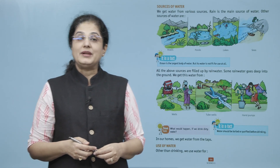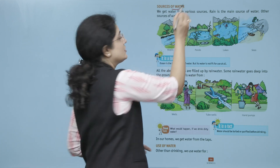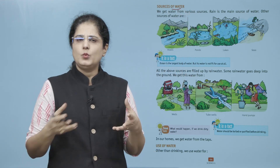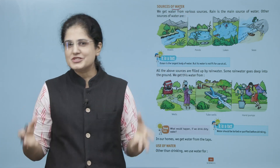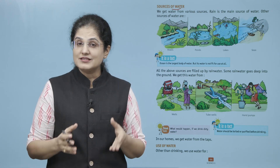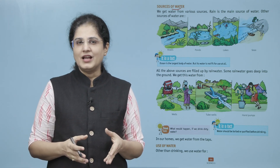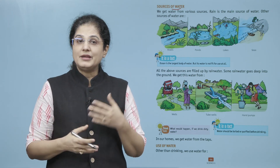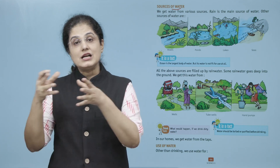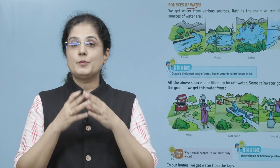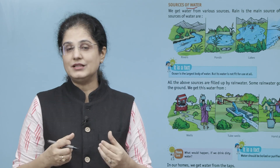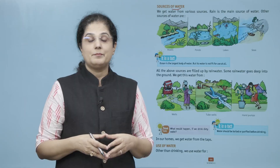Now let us look at the sources of water. We get water from various sources. Rain is the main source of water. Ab hameh jo paani hai, woh alag-alag sources se milta hai. Aur jo main source hai, jisse hameh paani milta hai, woh hai baarish.